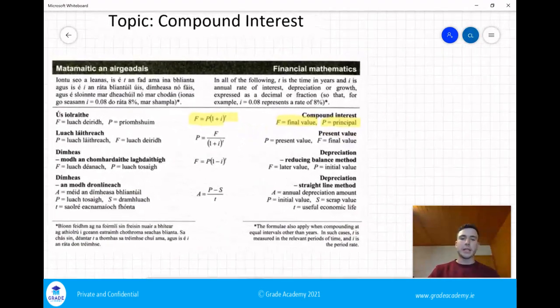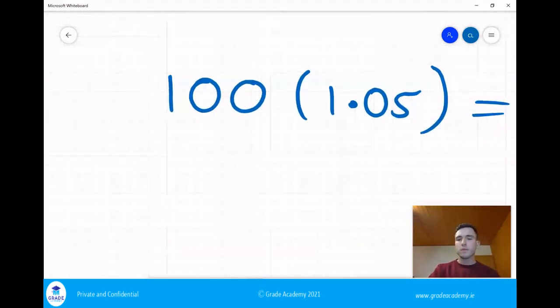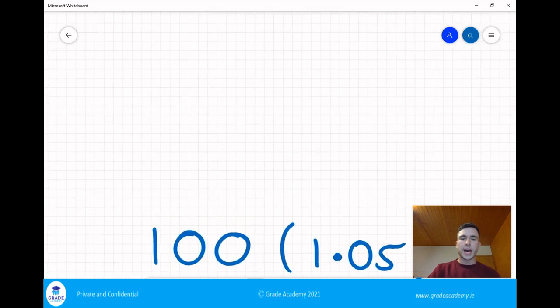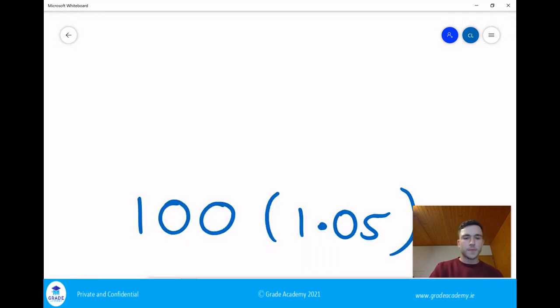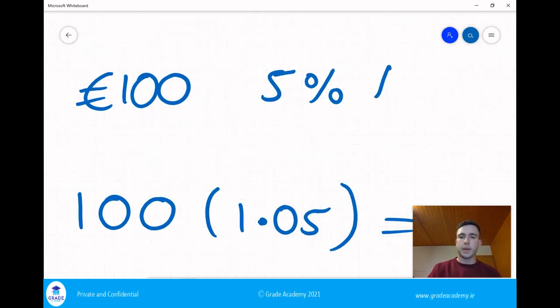I'm going to give us an example. Let's say we had 100 euro, we were investing 100 euro and we had 5% APR.